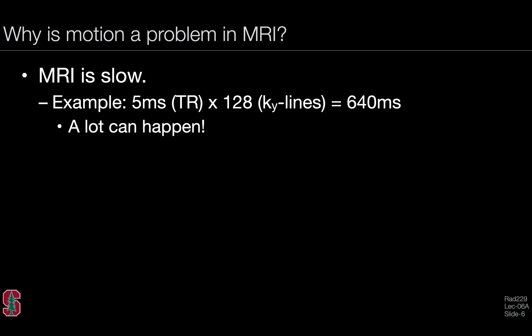As a simple example, we can think of a TR, the time it takes to acquire one line of K-space, being about 5 milliseconds. We may need 128 lines, even for an intermediate or modest resolution image. The total temporal footprint to acquire that much data would be about 640 milliseconds, just over half a second. And in just over half a second, a lot can happen. There can be substantial amounts of physiologic motion.